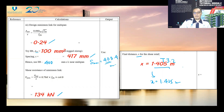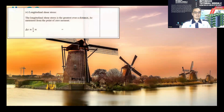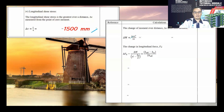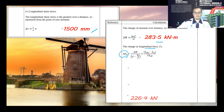Next, the longitudinal shear stress check. The moment at x equal to 1.525 meters is equal to 283.5 kilo-Newton meter. The change in longitudinal force, delta Fd, is equal to 226.4 kilo-Newton.